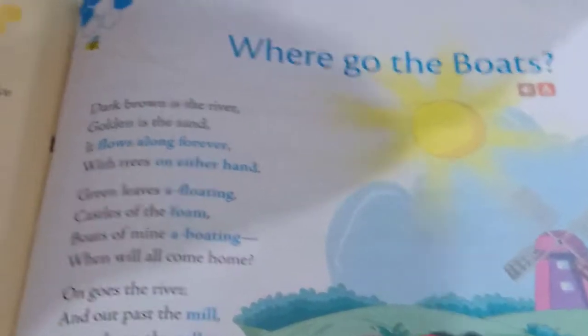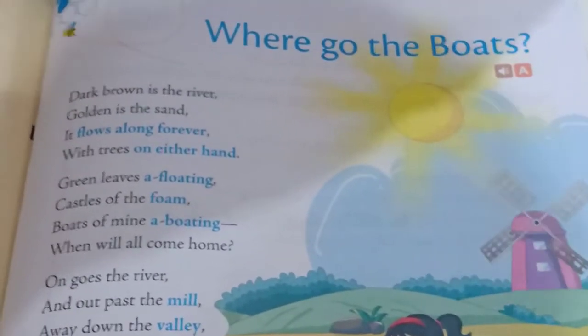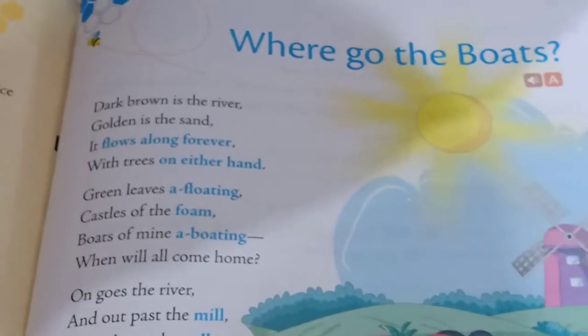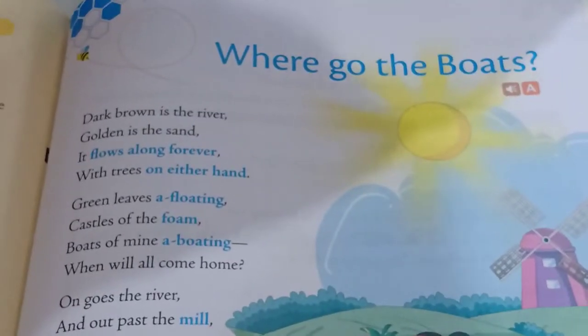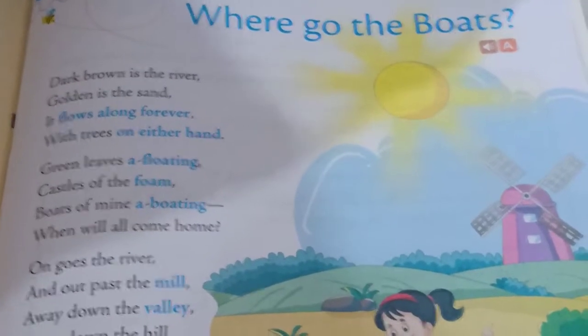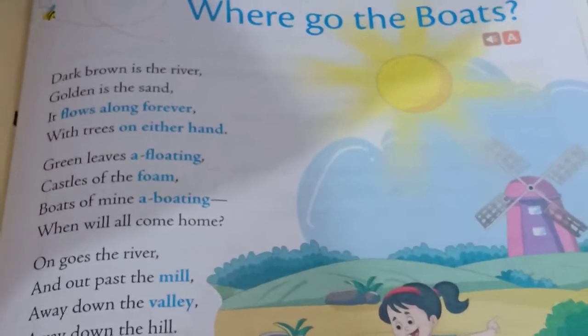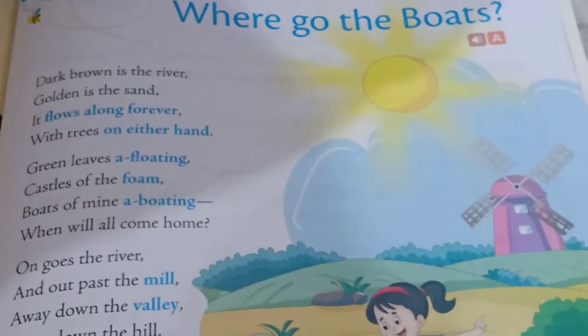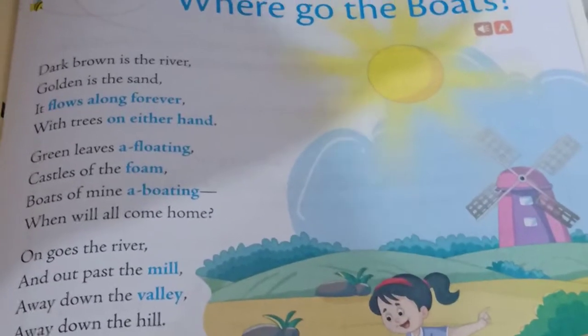In this poem, it is all about the boats and rivers — the boats which we make during monsoon time, when the rains are there and we make paper boats. So it is all about the boats, where go the boats. I will be reading this poem and I will tell you how you will recite it. Make sure that you listen to each and every word carefully — how to pronounce the words and sentences.